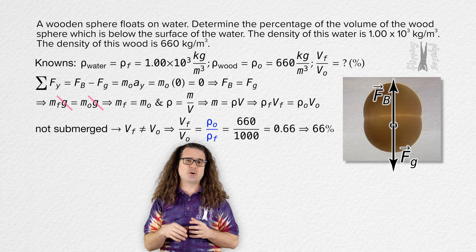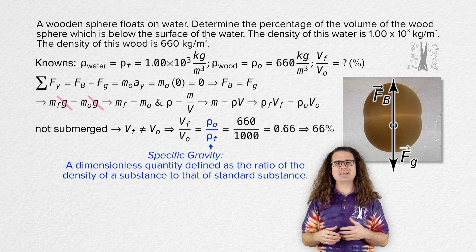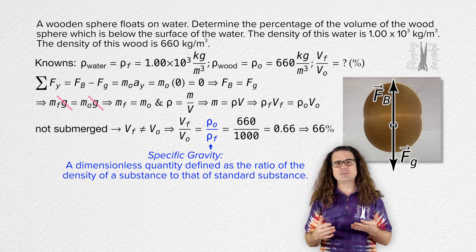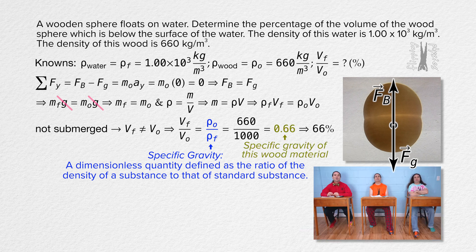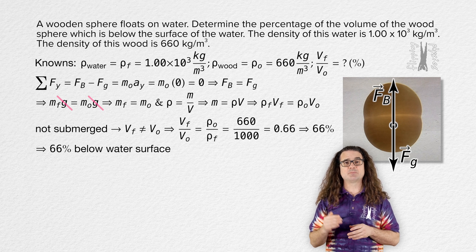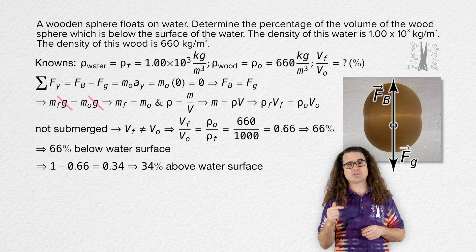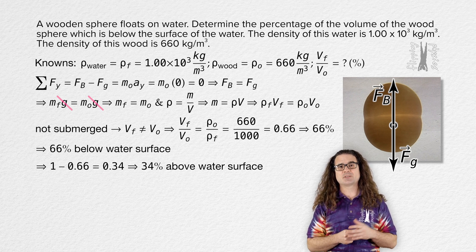Incidentally, this ratio is referred to as the specific gravity of the substance. Specific gravity is a dimensionless quantity defined as the ratio of the density of a substance to that of a standard substance. Typically, for solids and liquids, that standard substance is water at 4 degrees Celsius, which is what we are using here. So 0.66 is the specific gravity of this wood material. We know 66% of the volume of the sphere is below the surface of the water, meaning 34% of the wooden sphere is above the surface of the water. And realize the shape of the floating object is irrelevant — no matter what shape it is, 34% of a solid object with this density will be above the surface of the water as it floats.